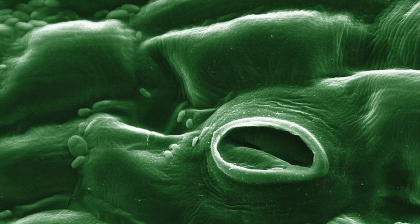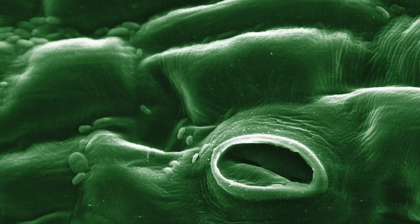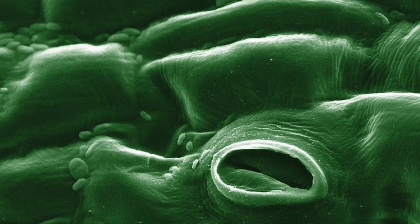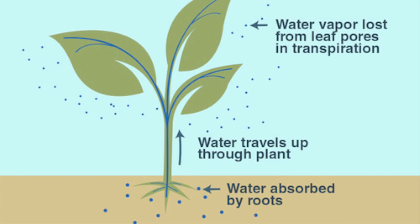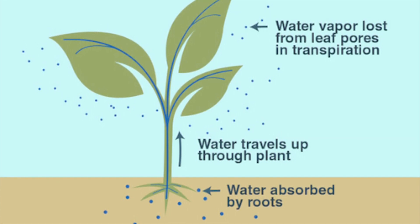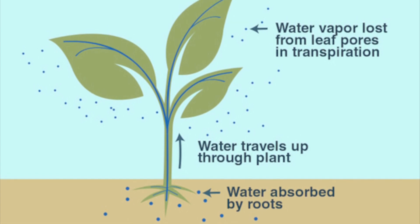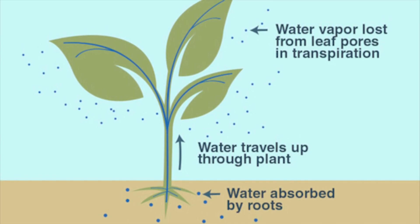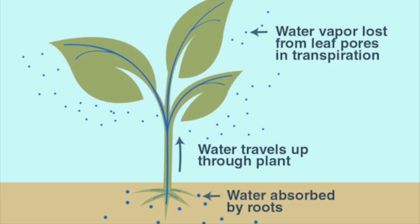This loss of water is called evaporation and this constantly occurs in the leaves — this is called transpiration. As the water evaporates from the leaves, more water is pulled through the xylem from the roots. This moves to the leaves and is then lost in transpiration, and this process is known as the transpiration stream.